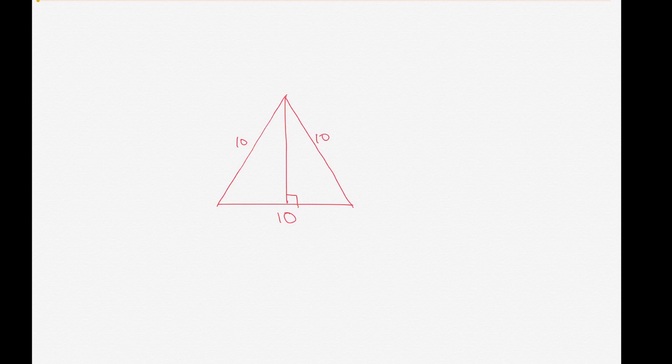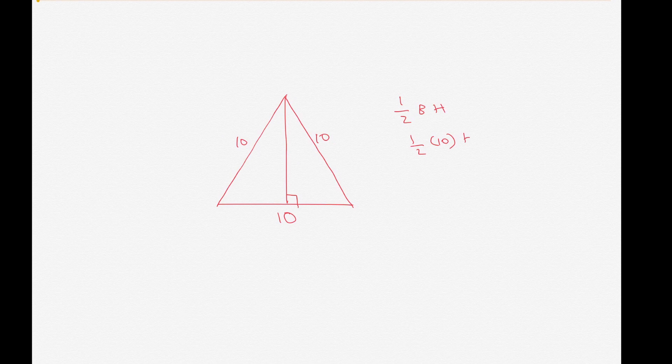Now the formula for an area of the triangle is one-half the base times the height. Here we have the base, that's ten, so we have one-half of ten times the height, and the height is this line here. How are we going to get the height?